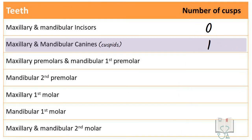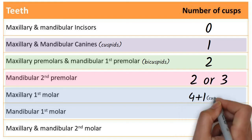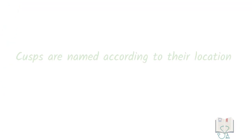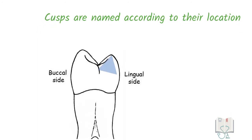There are different numbers of cusps in different teeth. Canines have one cusp; premolars have two cusps, except for the mandibular second premolar which may have two or three cusps. Maxillary and mandibular first molars have five cusps and second molars have four cusps. The cusps are named according to their location on the tooth — for example, in premolars, one on the lingual side is the lingual cusp and one on the buccal side is the buccal cusp.